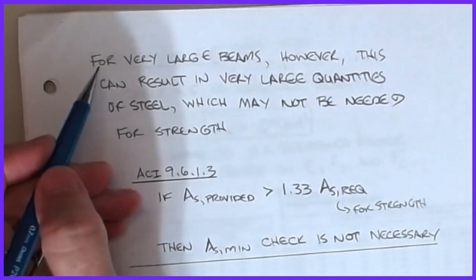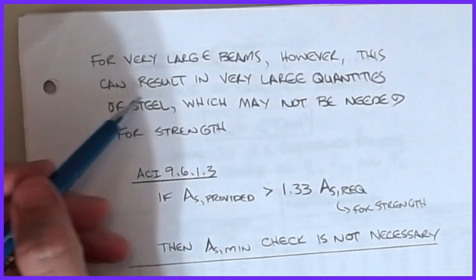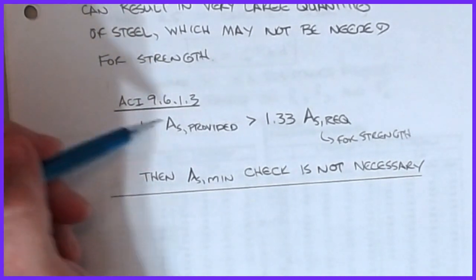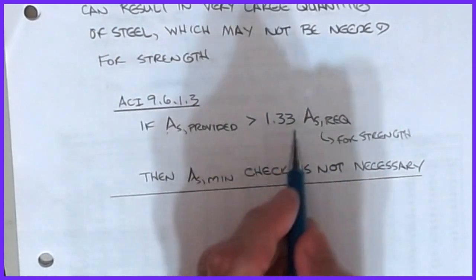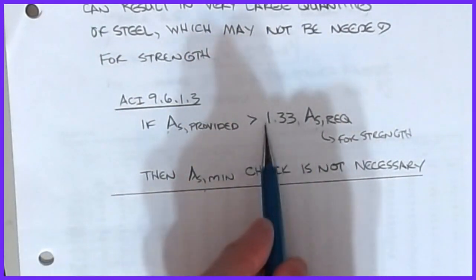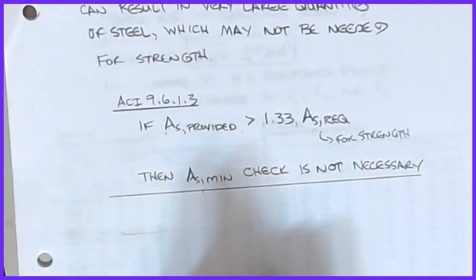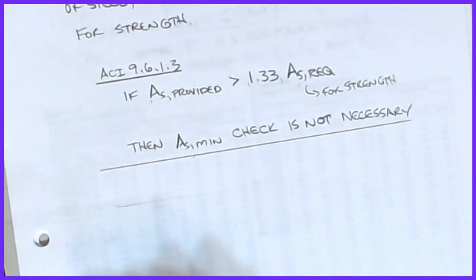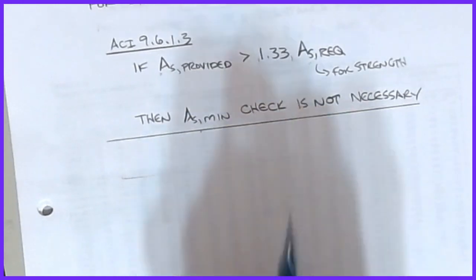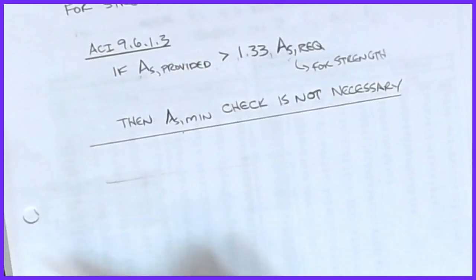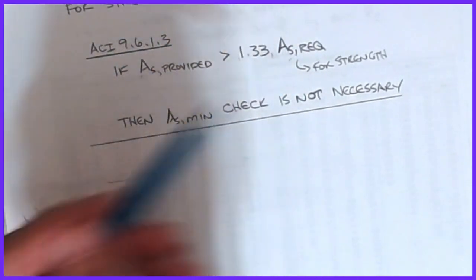For very large beams, the minimum reinforcement requirement can result in a very large quantity of steel that may not actually be needed for strength. ACI section 9.6.1.3 provides a provision: if the area of steel provided is at least 33% higher than what's required for strength, then the As_min check is not required. This prevents having to put in massive amounts of extra steel just because the beam dimensions are very large.